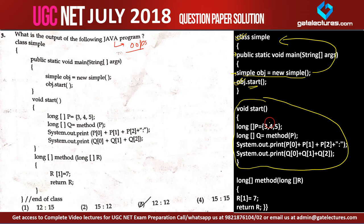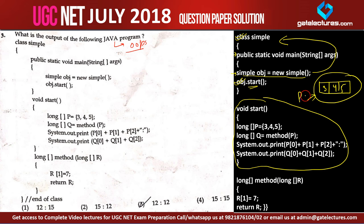Now in the start function, we have a long array p. Arrays in Java are implemented in the form of classes. So we have the values 3, 4, and 5 in this array p. Now we are calling q, and in this method q we are passing this array p. So here, long q is another array and this is not initialized — it will be instantiated because of this.